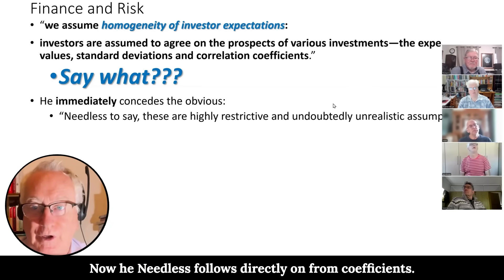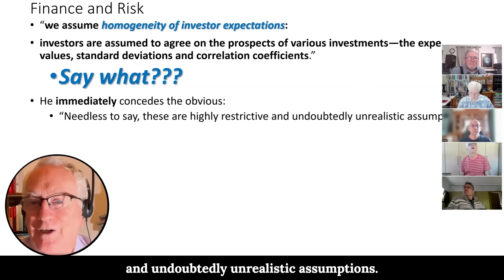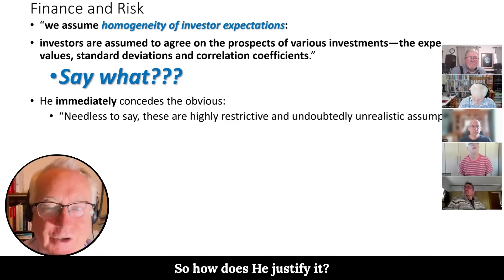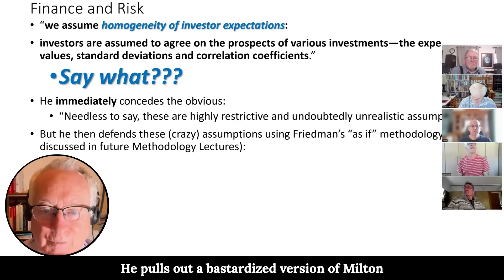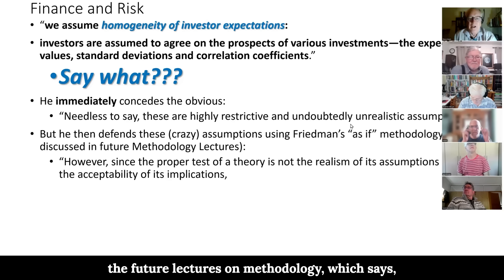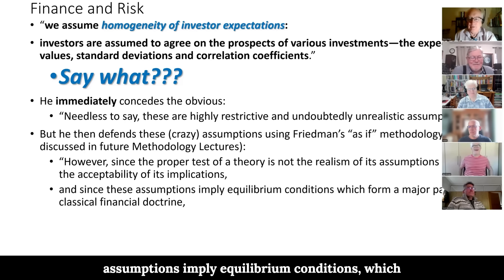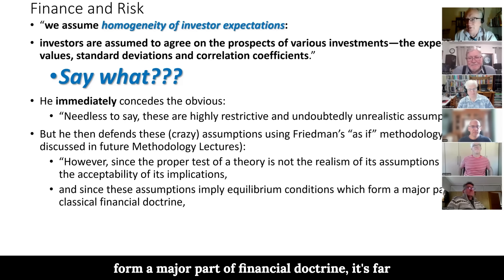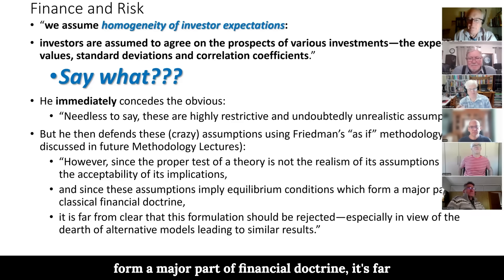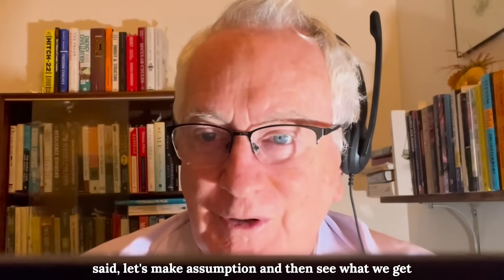Now needless follows directly on from coefficients. There's no break between the two. He said, needless to say, these are highly restrictive and undoubtedly unrealistic assumptions. So how does he justify it? He pulls out a bastardized version of Milton Friedman's as if methodology, which I'll discuss in future lectures on methodology. He says, however, since the proper test of a theory is not the realism of its assumptions but the acceptability of its implications, vague waffle. And since these assumptions apply equilibrium conditions which form a major part of classical financial doctrine, it's far from clear that we should reject this, especially since there seems to be no other theory out there. So it was not exactly a ringing endorsement. But he said, let's make this crazy assumption and then see what we get.